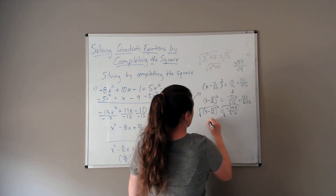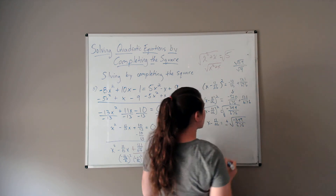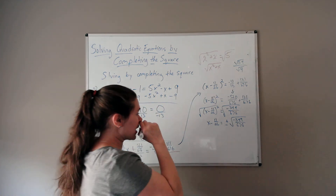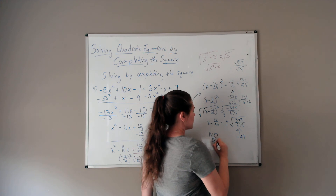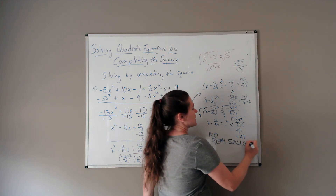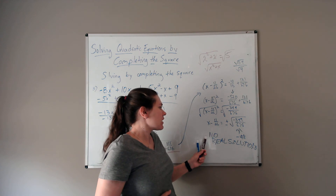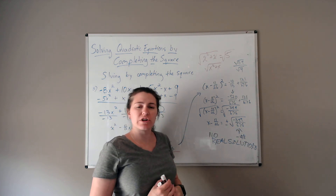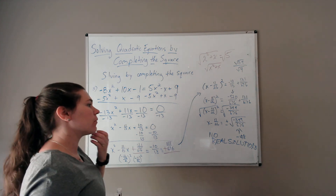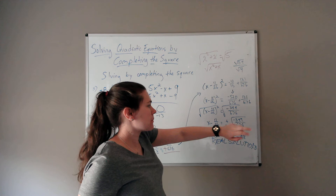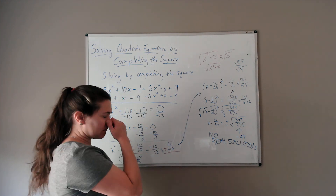Taking the square root, we get x minus 11 over 26 equals plus or minus the square root of negative 399 over 676 — the square root of a negative number. This is not real. When you do completing the square and get the square root of a negative number, this means there are no real solutions. We'll study complex numbers later and find the actual values, but right now, whenever you get the square root of a negative number while completing the square, stop and say: no real solutions.